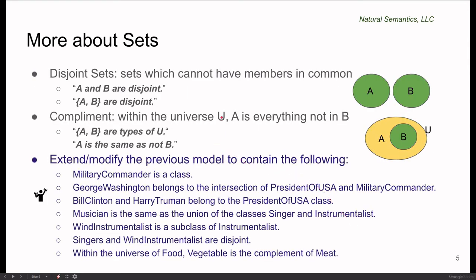Disjoint sets are sets which cannot have members in common. So in terms of Venn diagrams, if A and B do not overlap, do not touch, if you will, then they are disjoint. In terms of our controlled English, A and B are disjoint, or we can have a list of sets that are disjoint.